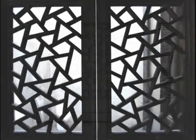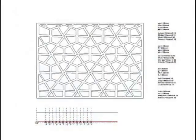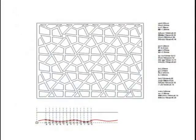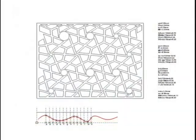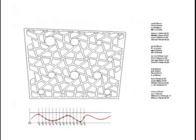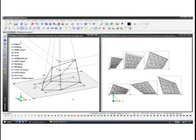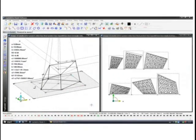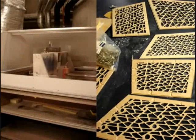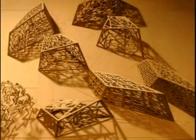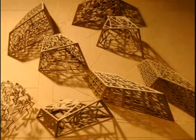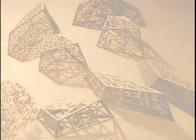Associative design is a parametric design technique using metric parameters to create an infinite number of variations. It is a technique based on associative geometry. Such geometries describe the relationship between various assemblies and constitute the design object as a mutually linked geometrical construction.